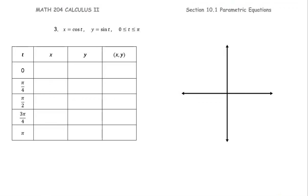Example 3: x equals cosine t, y equals sine t, where t is greater than or equal to 0 and less than or equal to pi.